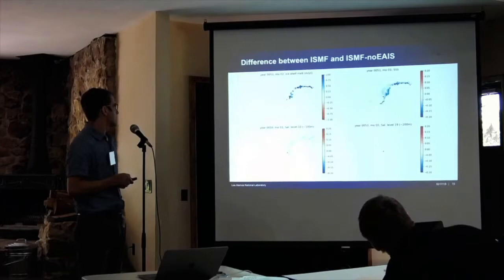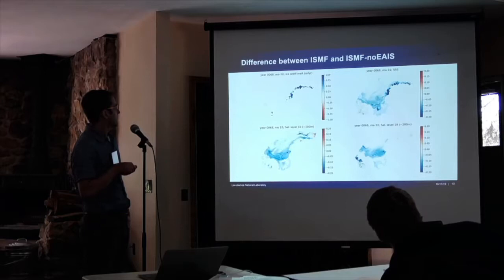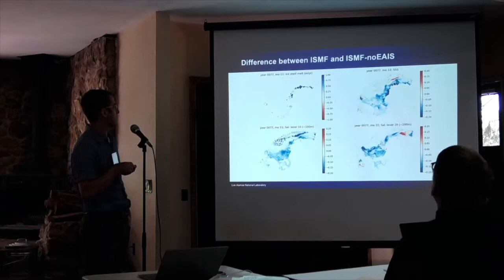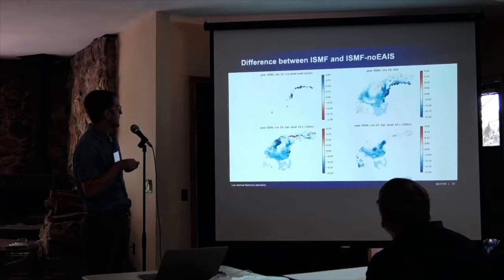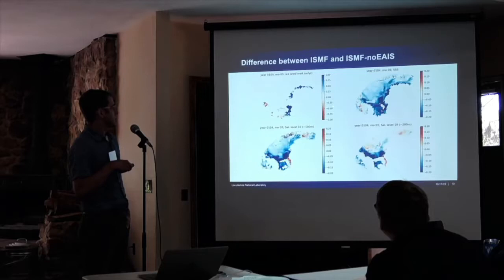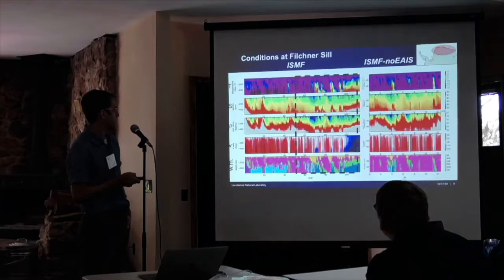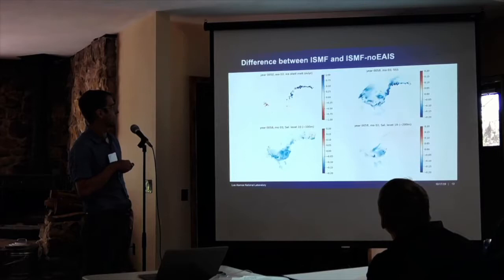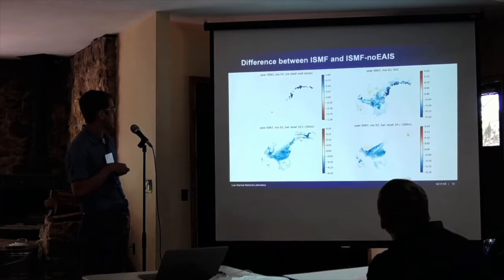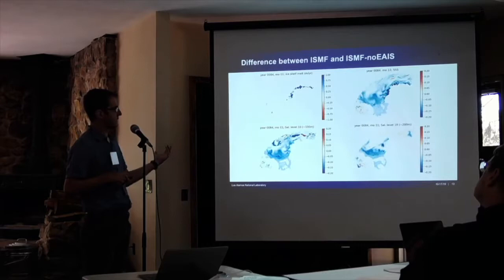We had this idea: if these freshening events are related to upstream ice shelf melt, what if we disable that ice shelf melt? In the second simulation where we've disabled melting from this region of the continent, we still see occasional incursions of CDW at the Filchner sill, but they don't become persistent and they don't lead to the runaway melting effect. The eventual permanence of southward flow of CDW in the original run is avoided once we have disabled the melting from upstream.